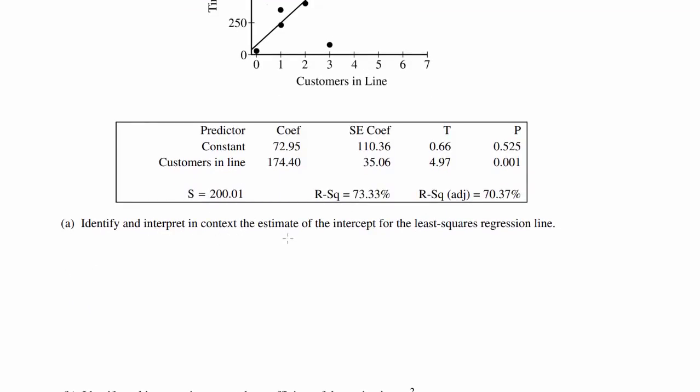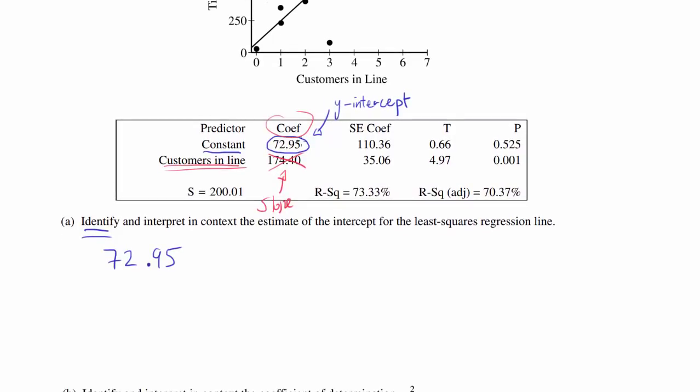Identify and interpret in context the estimate of the intercept for the least squares regression line. Well, identification part is pretty easy. You look at the constant and you just look at the value. So 72.95 is the estimate. Make sure you don't put 174.40. That's estimating the coefficient of the customers in the line. That's the estimate of the slope. And the constant is the y-intercept. So we know it's 72.95 seconds because y is in units of seconds.